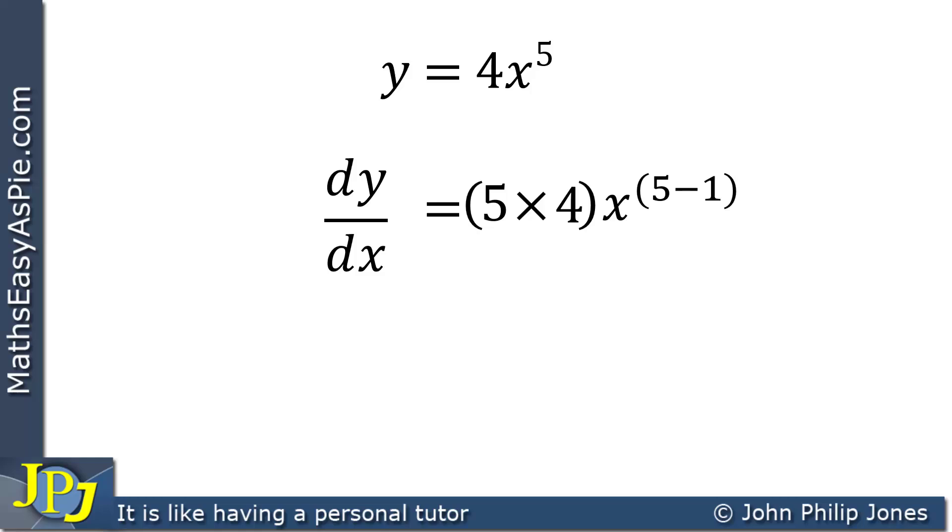So we can continue by writing down dy/dx equals, and this is 5 times 4, which is 20. So we write 20 down here. And this is x to the power 5 minus 1. So this will become x to the 4, as you can see here. So when we differentiate this, as shown by dy/dx, we end up with 20x to the power 4.